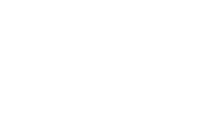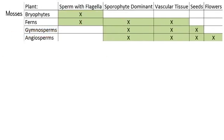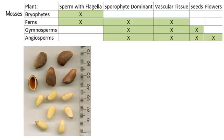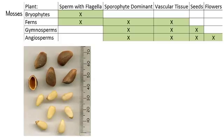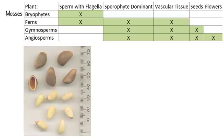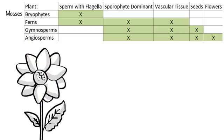The major differences between these five types are that mosses are the most primitive. Ferns have a vascular system like xylem and phloem. Gymnosperms produce seeds and don't require their sperm to use water. Angiosperms produce flowers.